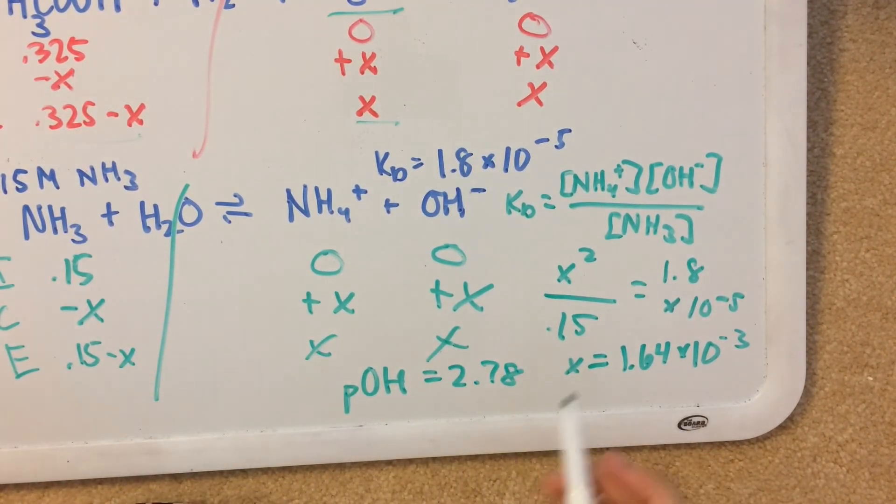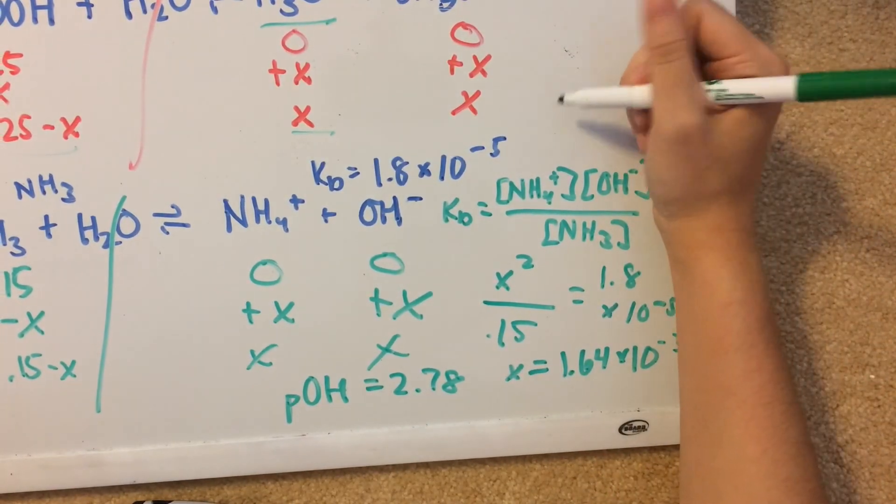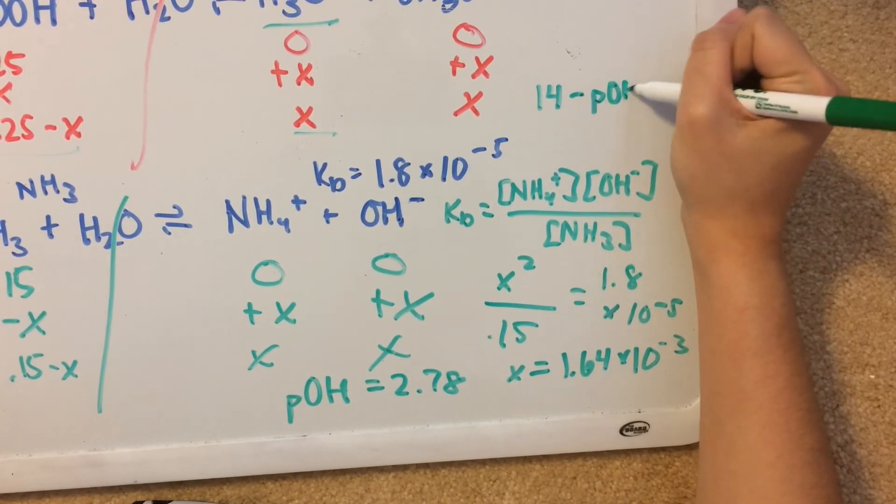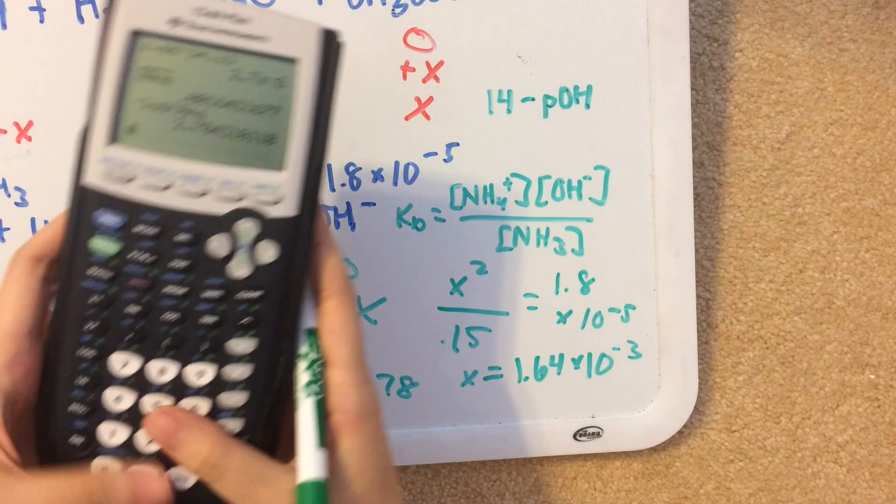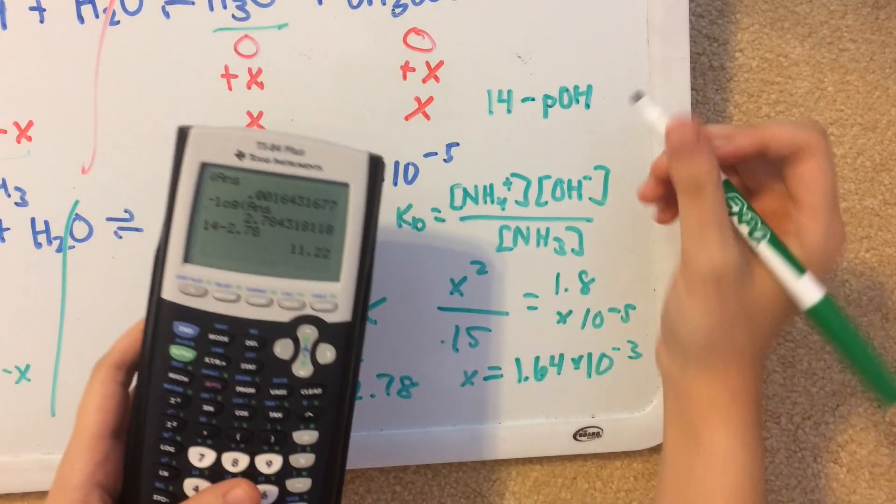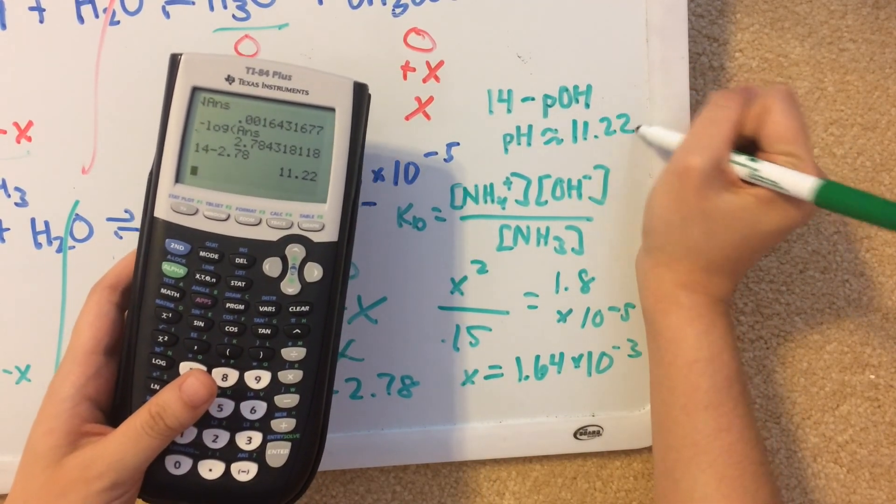And to find pH, all we need to do is do 14 minus pOH. So we have 14 minus 2.78. And that gives us a pH of about 11.22.